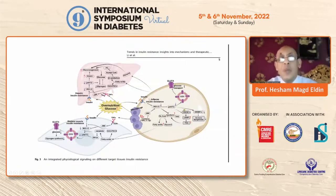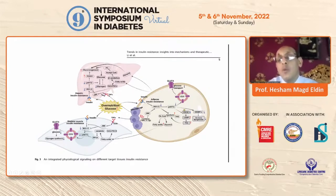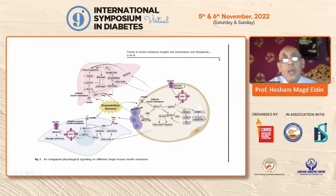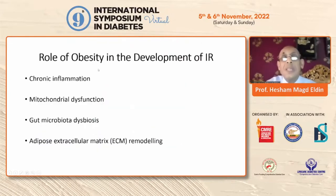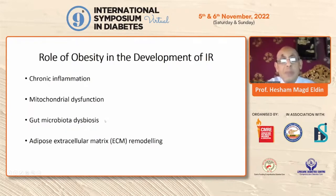When a patient develops insulin resistance, there is deposition of macrophages with release of inflammatory cytokines, and reduced glucose transport movement, causing increased free fatty acid production. These inflammatory cytokines, along with free fatty acids, affect the muscle, decreasing glucose entry, and affect the liver, causing increased gluconeogenesis and decreased glycogenesis. So obesity can cause insulin resistance through chronic inflammation, mitochondrial dysfunction, gut microbiota dysbiosis, and adipose extracellular matrix remodeling.